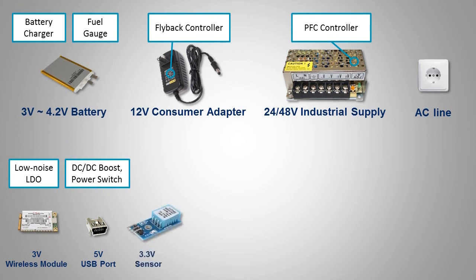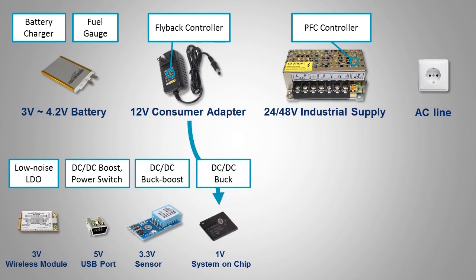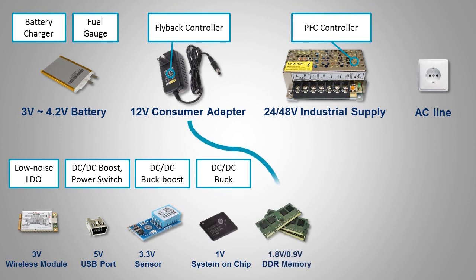To power a 3.3 volt sensor from a battery, you need a buck-boost to either step down or step up the voltage at different battery voltage conditions. Most system-on-chip devices require low voltage but can draw large currents, so a high current buck step-down converter is the right choice.